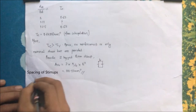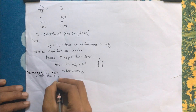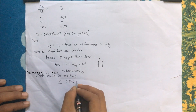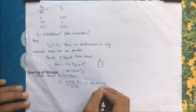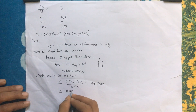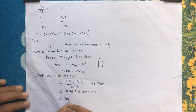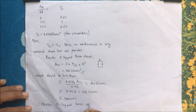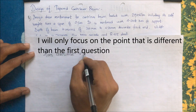For nominal shear reinforcement, the spacing must be less than: 0.87·F_y·A_sv / (0.4·b) = 364.42 mm; 0.75·d = 412.5 mm; and 300 mm. The spacing should be the minimum of these values. Provide two-legged 8 mm stirrups at 300 mm center to center.